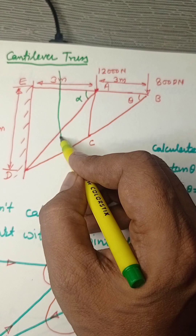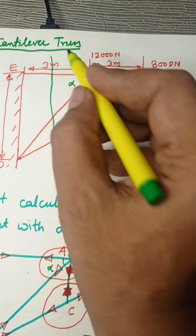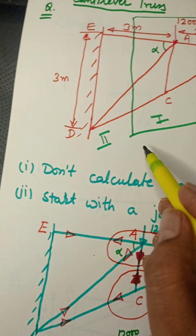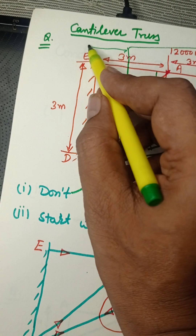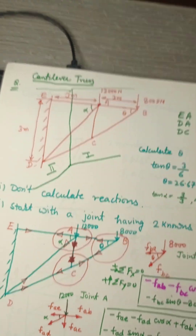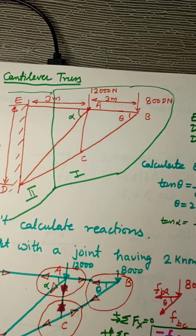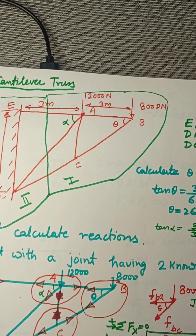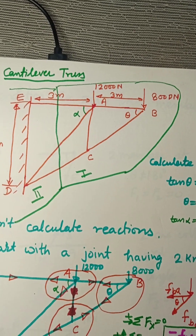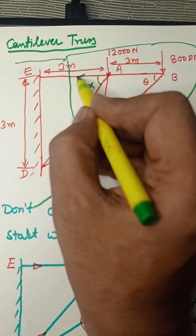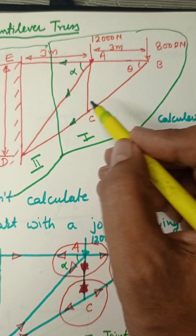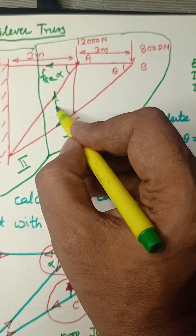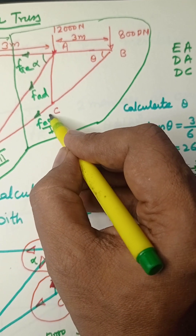We cut the truss, giving section 1 on one side and section 2 on the other. When using method of sections on a cantilever truss, always analyze only the free end — the free section. Do not pick the supported section. Assume forces in the cut members (FAC, FAE, FAD, FCD) away from the joint as tensile forces.